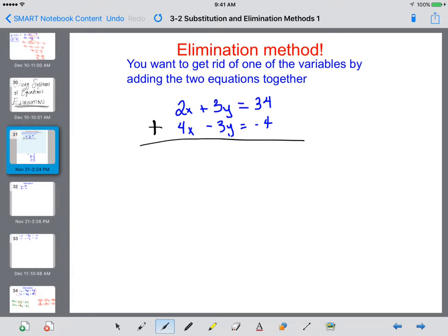So if I go 2x plus 4x, I get 6x. When I do 3 plus a negative 3y, it eliminates, it goes away. 34 plus a negative 4 would be 30.